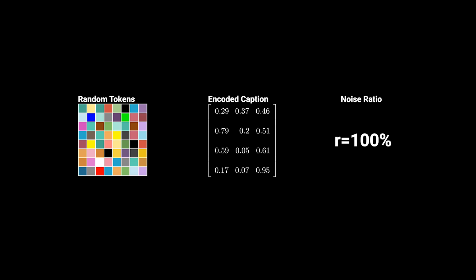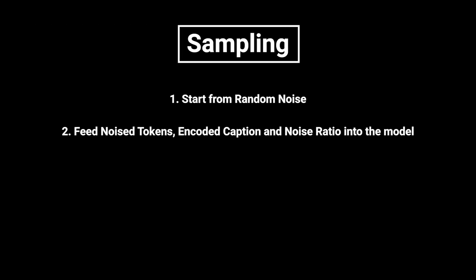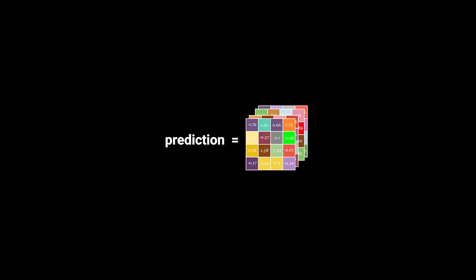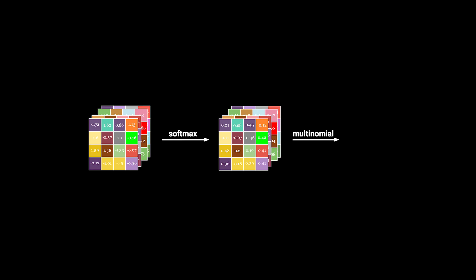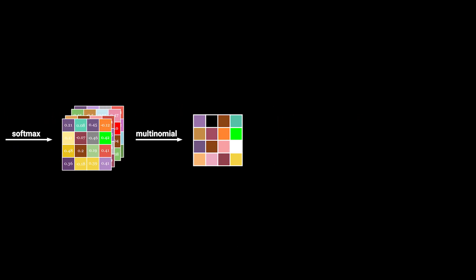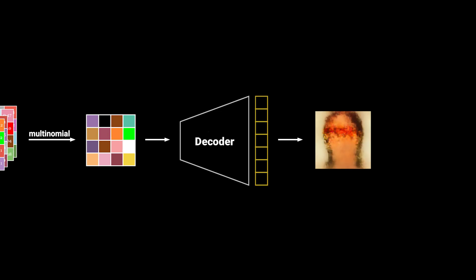We now let this model train for a long time and many steps. After training, we can try to sample new images and hope for good results. For sampling, we start off with the entire image being random tokens — equivalent to noising 100% of the tokens during training. We encode a caption with the transformer, feed the noisy tokens, the embedded captions, and the noise ratio of 100% into the model and let it predict the outcome. Every position in the output is a score distribution over all codebook tokens. We apply softmax to get a probability distribution, then sample using multinomial sampling. The result looks like a very broad sketch with no details, because during training we only noise images 100% for a small fraction of the time.